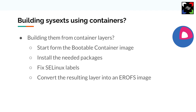Another interesting approach is building system extensions from containers. System extensions extend the base system — they're small files added on top — so you essentially want the diff between what you want on top and what you have on your base system. This is very much what container layers do: they start from a base image and add the diff. If we could take that diff and put it into an erofs file as a sysext, we could reuse all our existing container tooling. We'd still need to fix file labels and similar details, but it's likely doable.